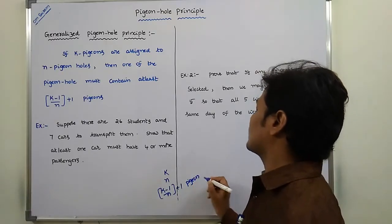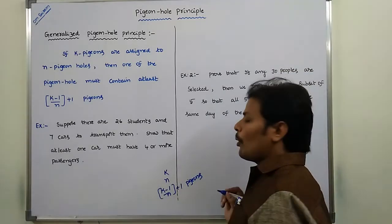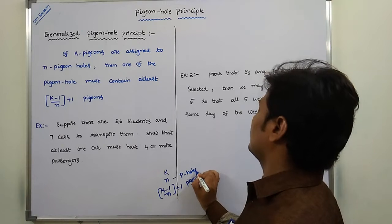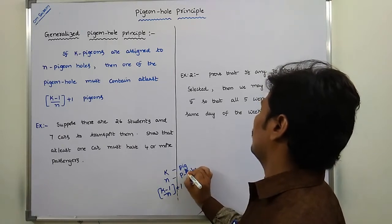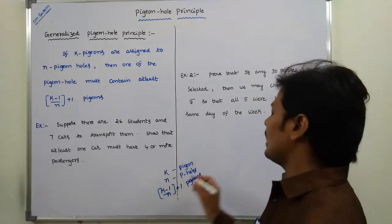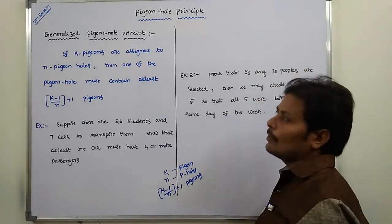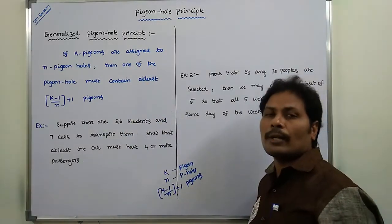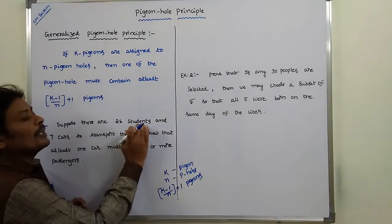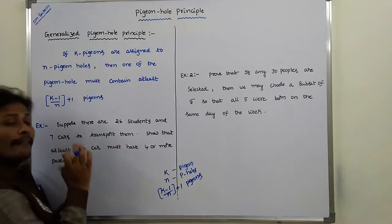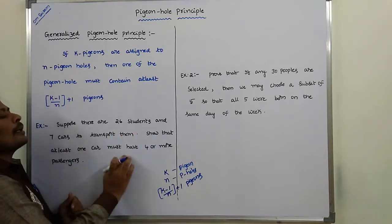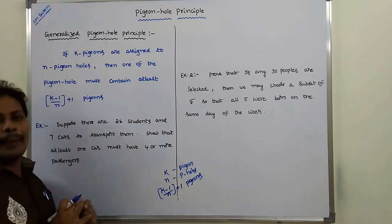At least one pigeon hole must contain ⌊(k-1)/n⌋ + 1 pigeons. This is the Generalised Pigeon Hole principle. Now we go to an example: suppose there are 26 students and 7 cars to transport them. Show that at least one car must have 4 or more passengers.